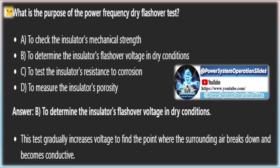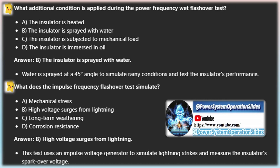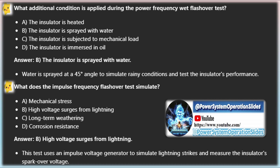Puncture voltage test: this test determines the puncture voltage of the insulator. The insulator is suspended in insulating oil, and a voltage is gradually applied until puncture occurs. The voltage at which the insulator punctures is called the puncture voltage, typically 30% higher than the dry flashover voltage for suspension-type insulators.